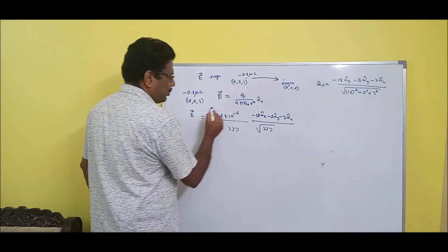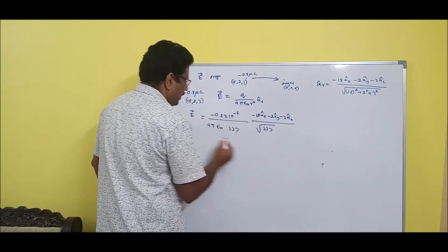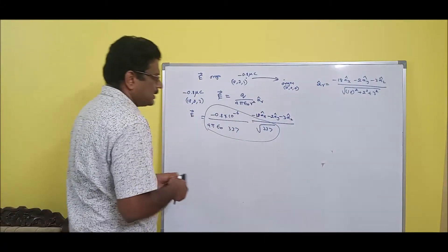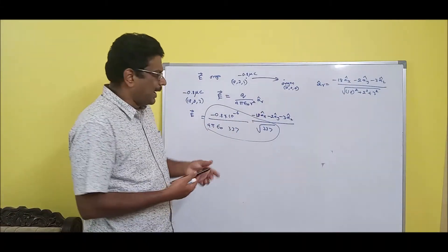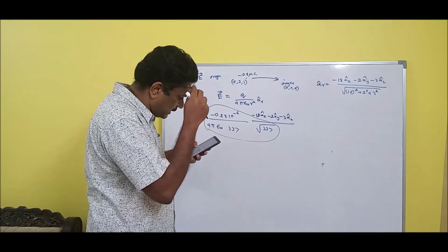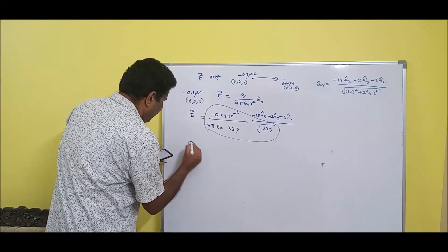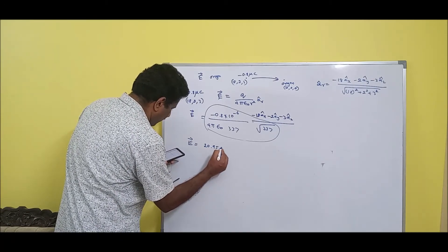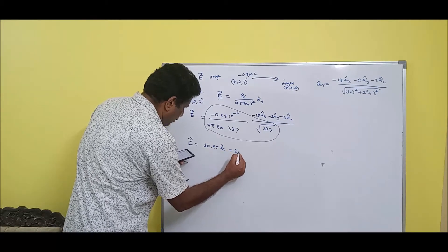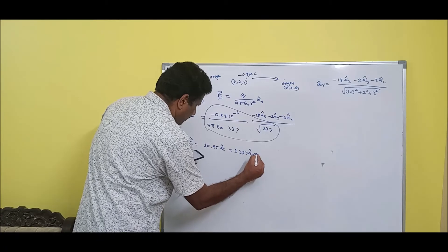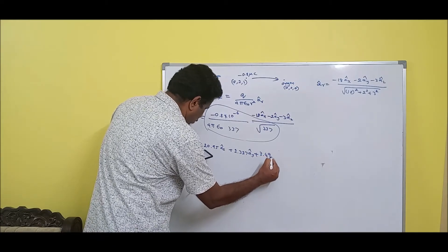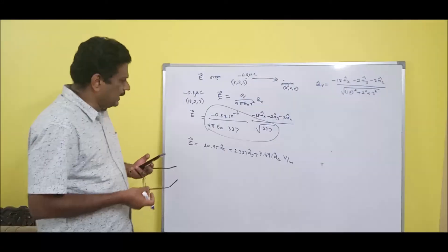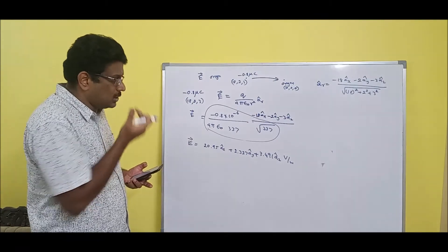Since we have a-r-cap divided by r, the r-squared term uses 337. Multiplying through, the result for the electric field intensity E is 20.95·ax-cap plus 2.327·ay-cap plus 3.491·az-cap volts per meter. The answer is ready in volts per meter.